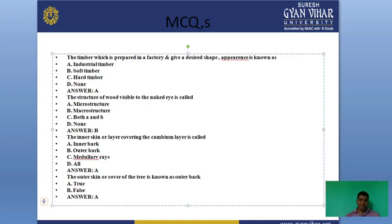Next question: the inner skin or layer covering the cambium layer is called — the answer is bark.